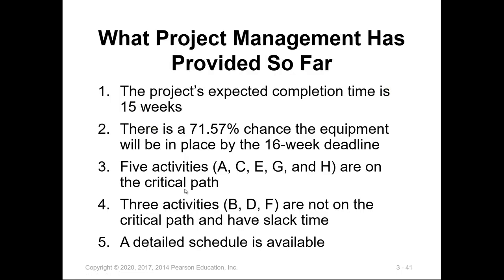With all the critical path method, PERT, probability, and statistical analysis, the project manager can determine the following: the project expected completion time is 15 weeks; there is a 71.57% probability that the project will be completed by the 16th week deadline; five activities — A, C, E, G, and H — are on the critical path; and activities B, D, and F are not on the critical path and have slack time. A detailed schedule is available for management or the client to review.